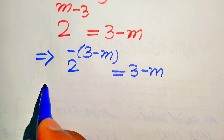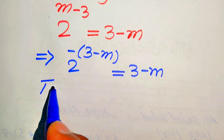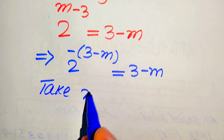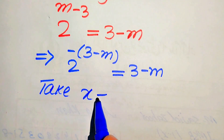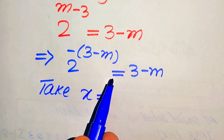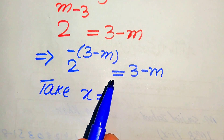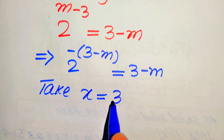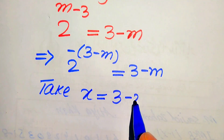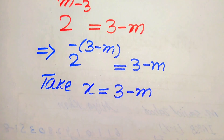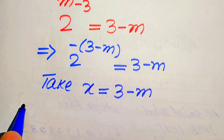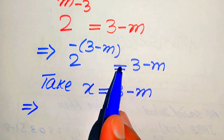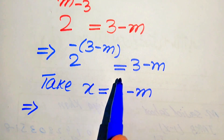Now we need to take some substitution. We take this exponent as x in order to write this equation in simplified form. We let x equals to 3 minus m, and now we move backward and put this value of x into the above equation.